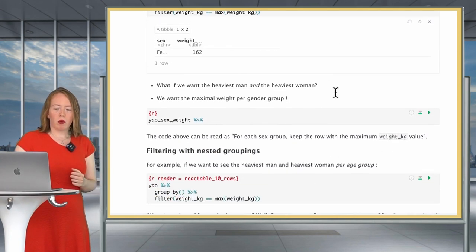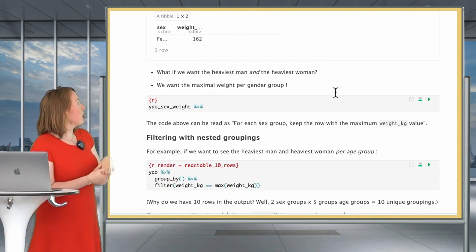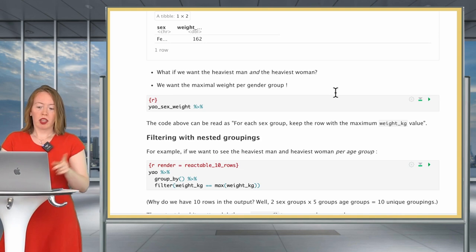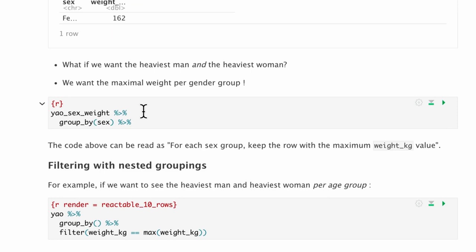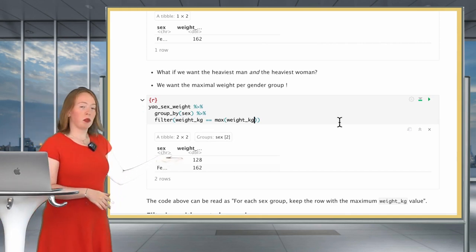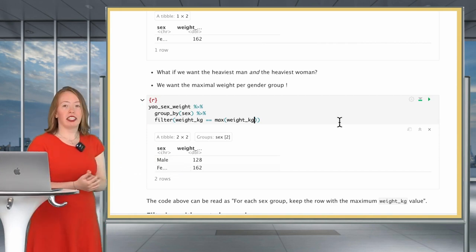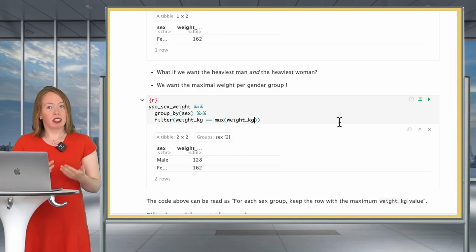Now, what if we wanted not the heaviest person in the whole data set, but the heaviest man and the heaviest woman? Well, we would have to take the maximal weight per gender group. This immediately makes you think of group_by. So we group by sex, and then we do the same filtering operation, but on grouped data. So once again, we do the weight in kilograms equal equal to the max weight in kilograms. And now, we do not only have this female who is 162 kilograms, we also have the heaviest male in our data set, which is 128 kilograms. So now we have had a grouped filtering to find the heaviest man and the heaviest woman.